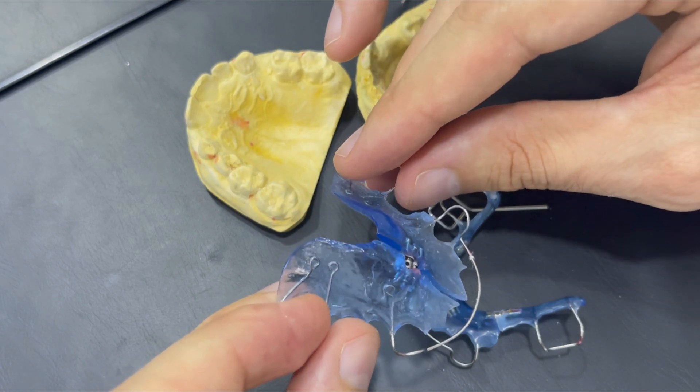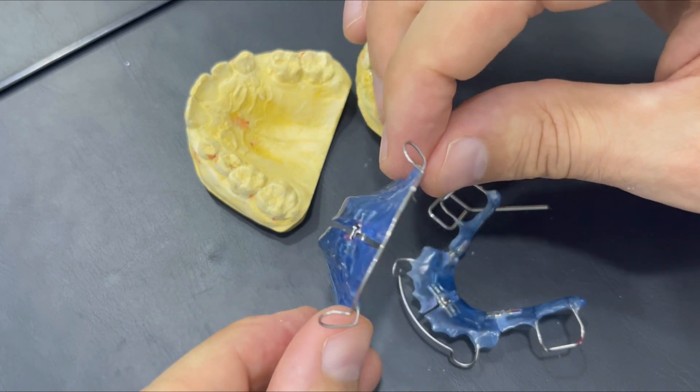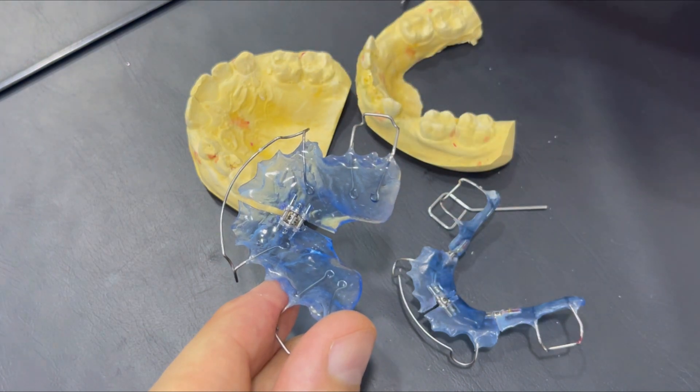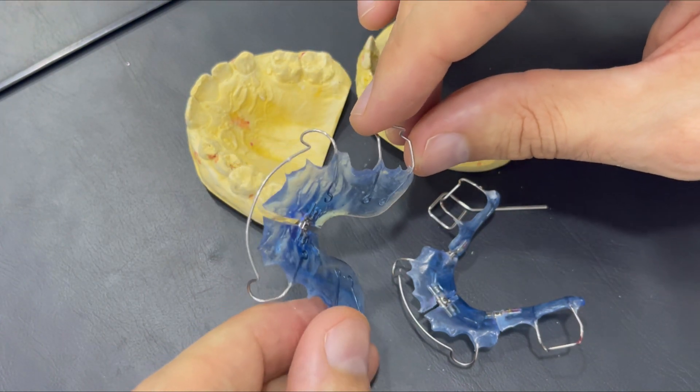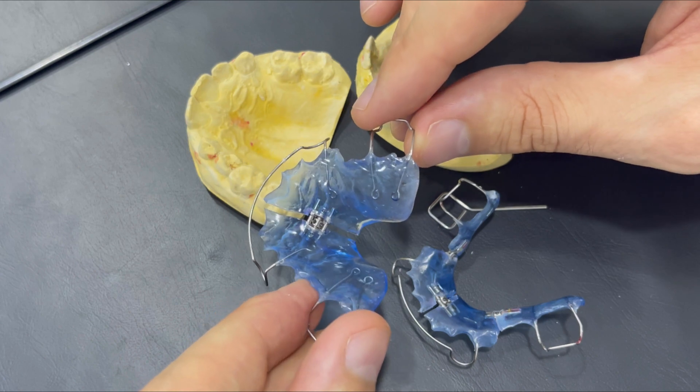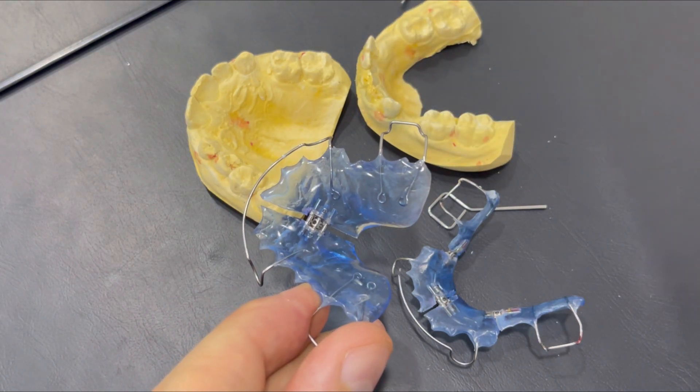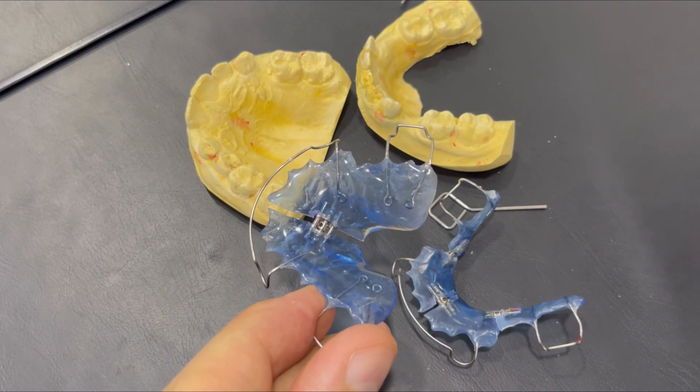Since the maxilla is connected directly with the nasal cavity, so creating more width to the maxilla is creating more space for the breathing. Because usually when the maxilla is narrow, the whole mid-face is narrow.